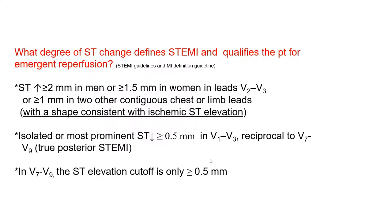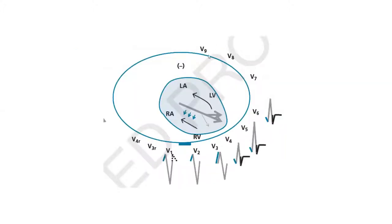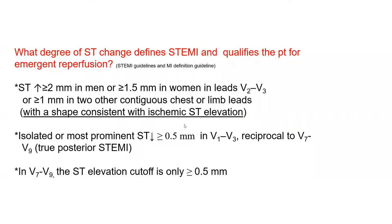All those qualify for emergent reperfusion, including with lytics if needed. This is why V7 through V9 uses a lower cutoff — those leads are further away from the heart than the anterior leads, so the ST elevation may be attenuated through posterior mediastinal and lung transmission. Similarly, we use a lower cutoff for ST depression in the anterior leads when defining a posterior infarct. Any ST depression in leads V1 through V3 is significant because normally you have a little bit of ST elevation in those leads.